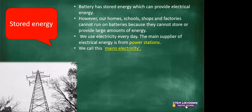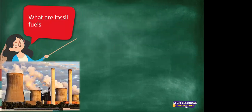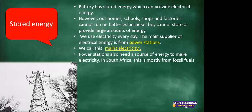The main supply of electrical energy is from power stations — that is what we rely on for our electricity. Power stations are also called mains electricity, and that is exactly where the electricity comes from. Power stations also need a source of energy to make electricity. In South Africa, this is mostly from fossil fuels. Our power stations burn fossil fuels to supply our homes, schools, streets, and communities with electricity.